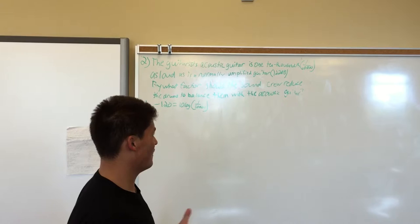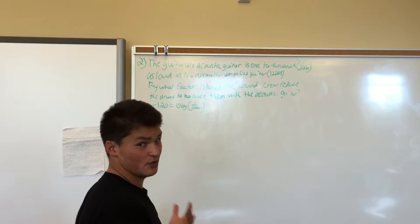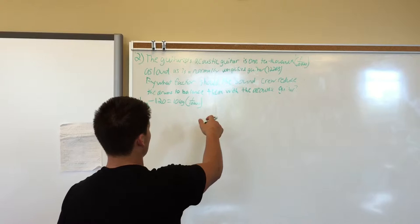The guitarist's acoustic guitar went ten thousandth as loud as a normally amplified guitar, which is 120 decibels as we know from the previous question. So it's asking us by what factor should the sound crew reduce the drums to balance them with the acoustic guitar?